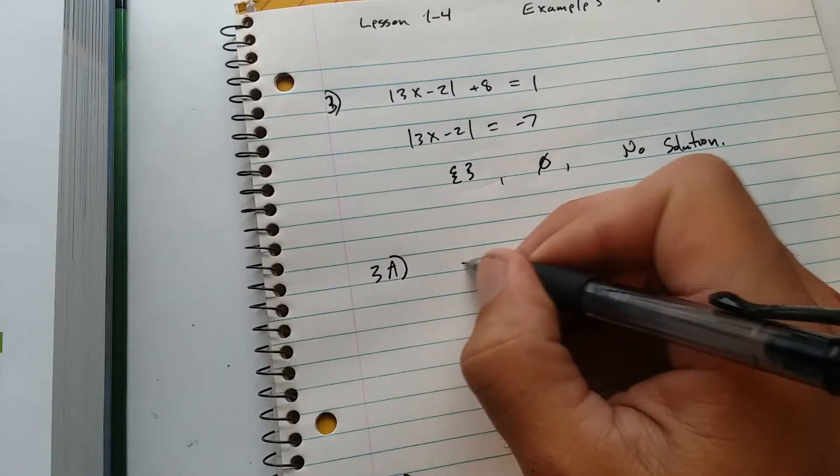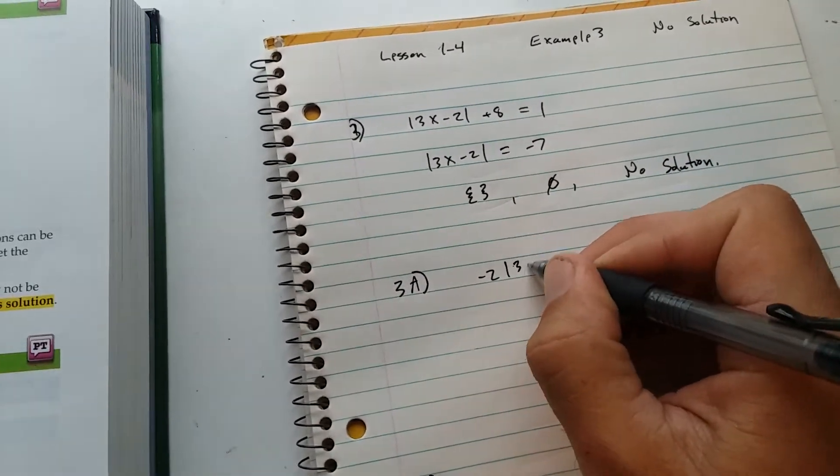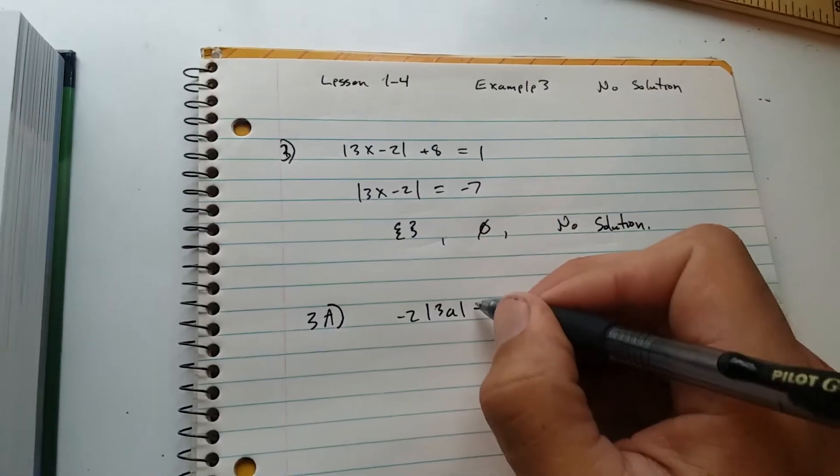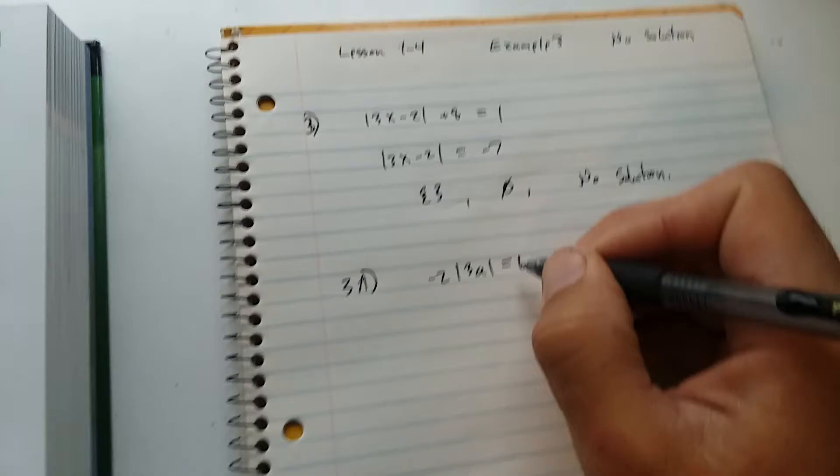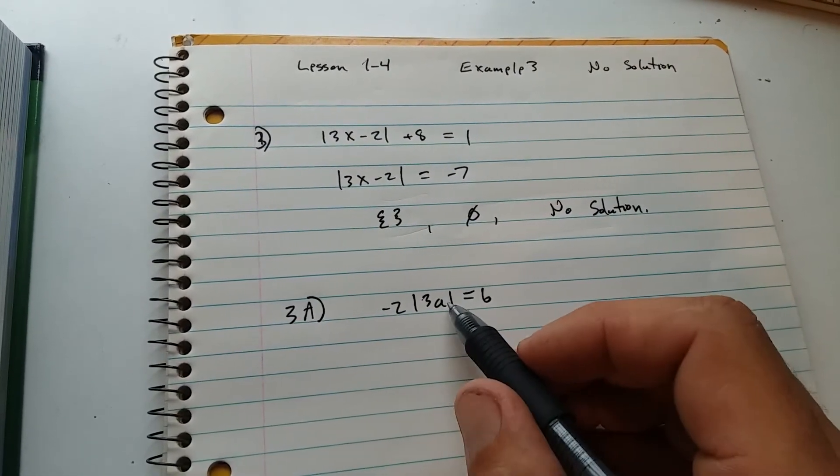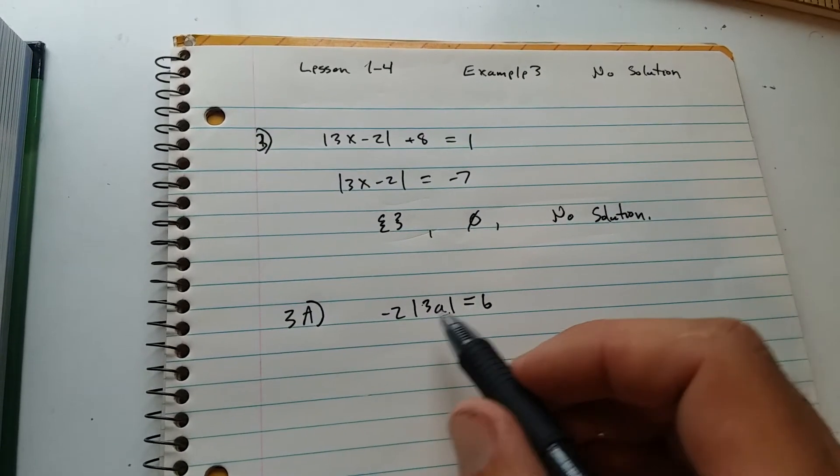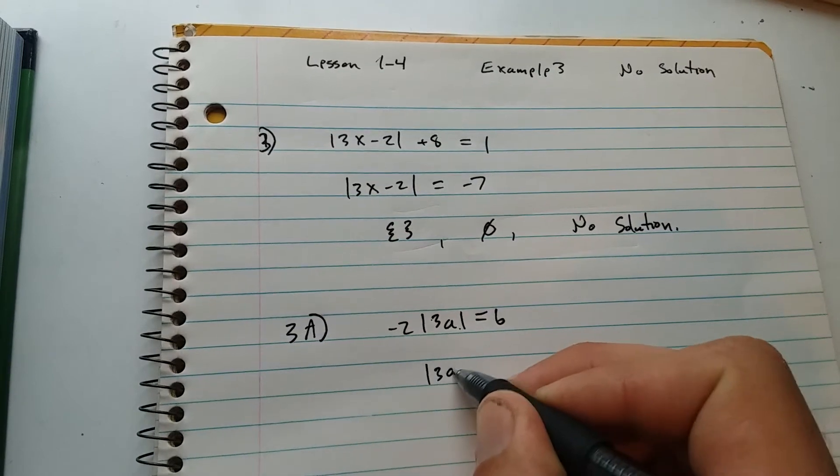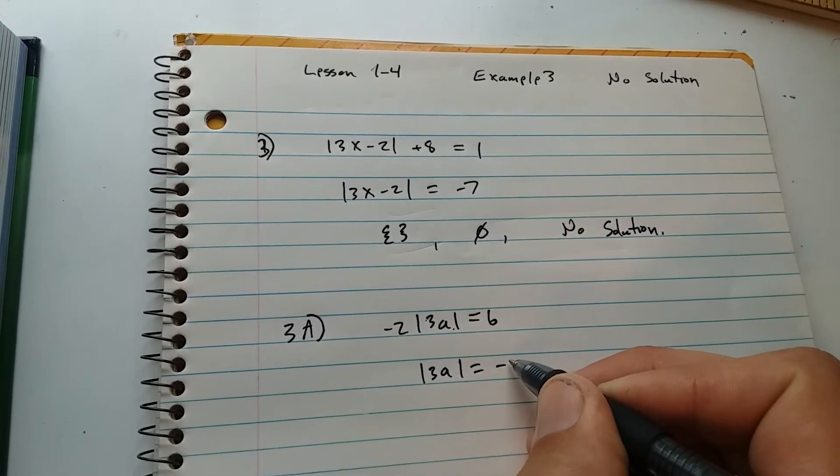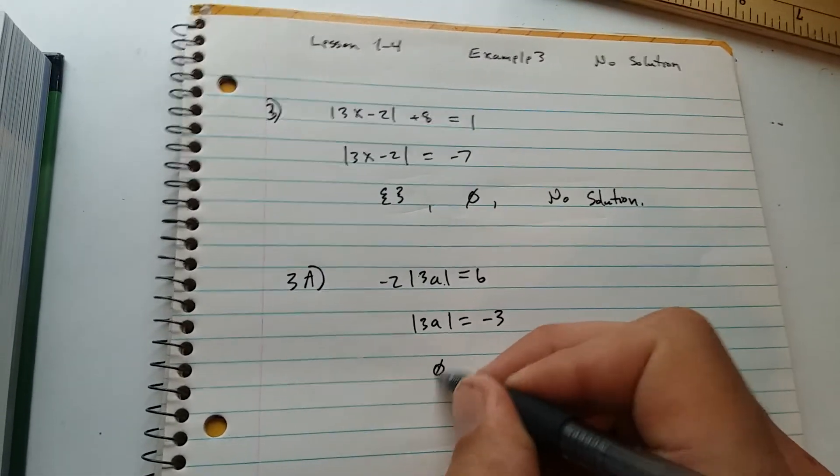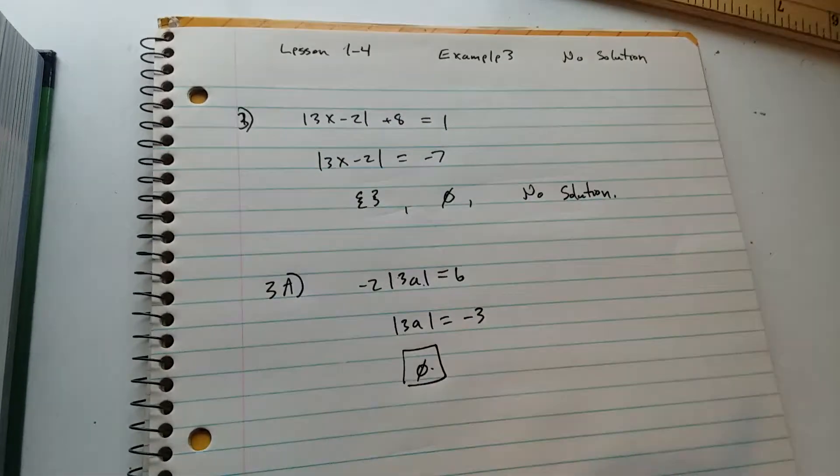3a is negative 2. So again, equals 6. You have to solve for the absolute value of 3a, so you've got to get the absolute value alone first. You can divide both sides by negative 2. Absolute value of 3a equals negative 3. This is impossible, so you just write no solution. I'm just going to do it this way.